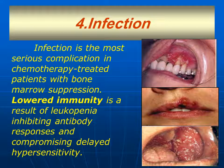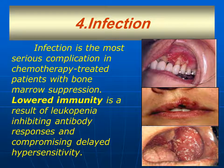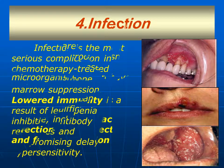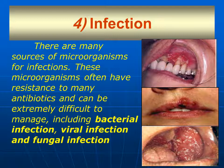The fourth manifestation is infection. Infection can be considered the most serious complication in chemotherapy-treated patients with bone marrow depression. The lower immunity of these patients is a result of leukopenia, thus inhibiting antibody responses and compromising delayed hypersensitivity. There are many sources of microorganisms for infections, which often have resistance to many antibiotics and can be extremely difficult to manage, including bacterial, viral, and fungal infections.